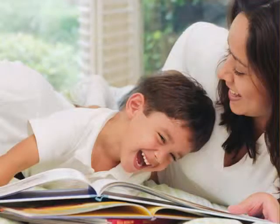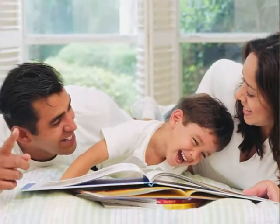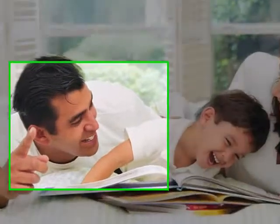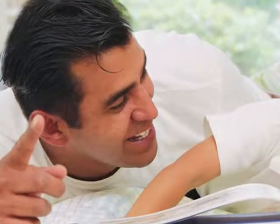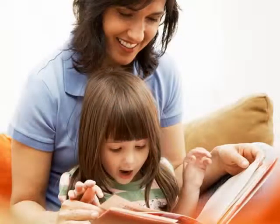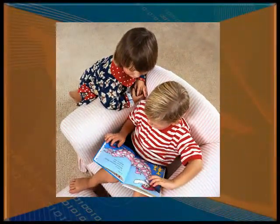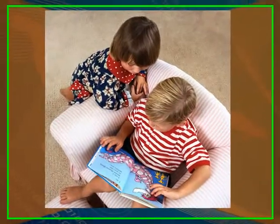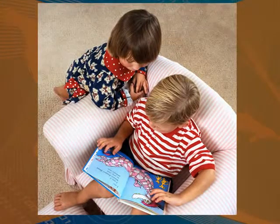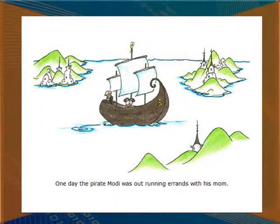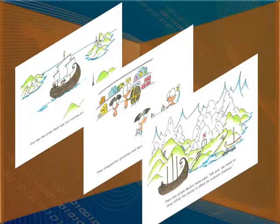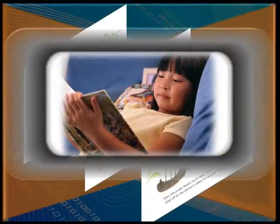This may sound a bit odd, but an illustrated children's book may well be one of the better examples to emulate when creating a PowerPoint presentation for adults. Why? Well, for one, it tells a story. And for two, the story gets parceled out in small chunks of information from one page to the next. Just look at the typical small children's book and you'll find it's not uncommon for there to be one sentence and one illustration per page. This simple design makes it easy to follow along — so easy, even a child can do it.